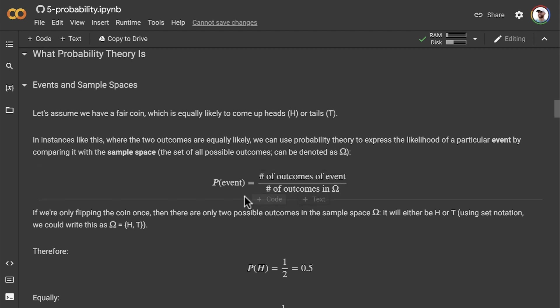An event is one particular observation or set of observations that we make, and then the sample space is the set of all of the possible outcomes, which we can denote with the Greek letter omega. The probability of some event is the number of outcomes of the event divided by the number of outcomes in our set of all the possible outcomes.